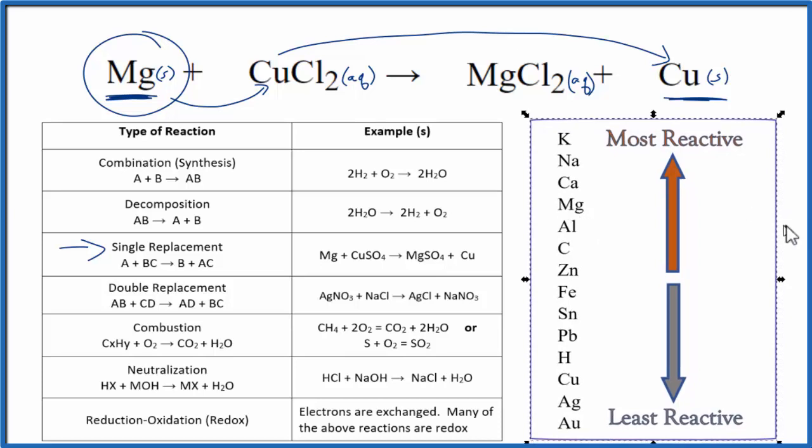This is called the activity series, and it shows us which elements are more reactive. If you look at the table, here's magnesium up towards the more reactive elements, and then copper is less reactive. So magnesium, since it's more reactive, can push that copper out and be with the chloride, making magnesium chloride.